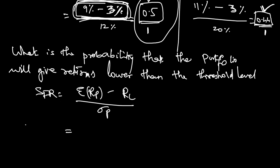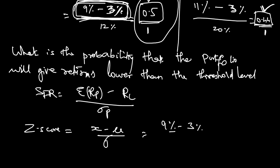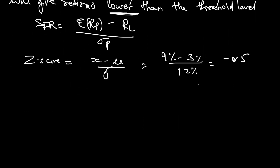I will juxtapose this formula with the Z-score formula. The Z-score formula is X minus mu, divided by standard deviation. Substituting the same numbers: 9% minus 3% divided by 12% gives 0.5. But because we want the probability that the portfolio gives returns lower than the threshold, I will use a minus sign, making the Z-score minus 0.5.